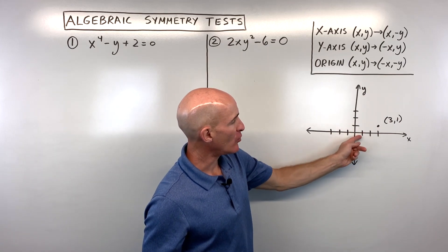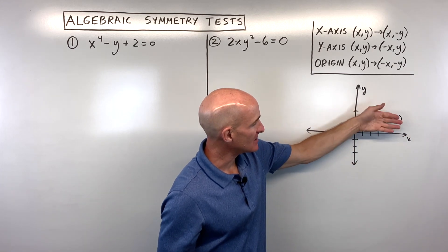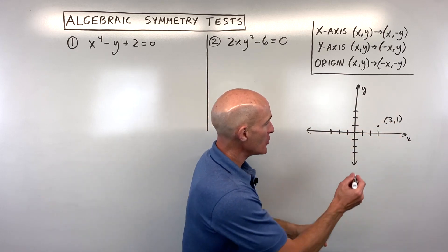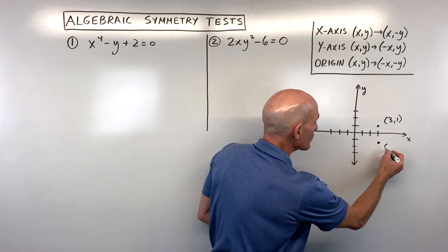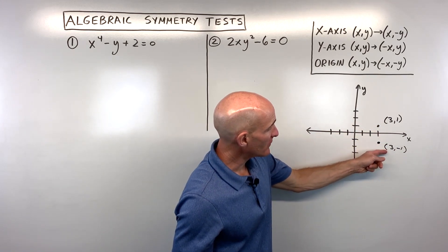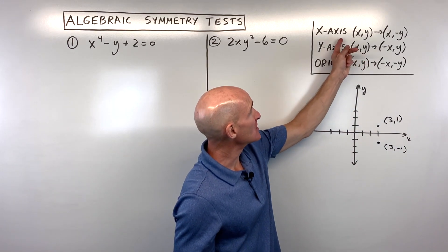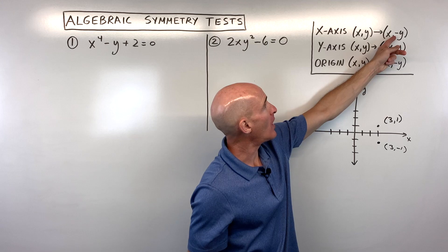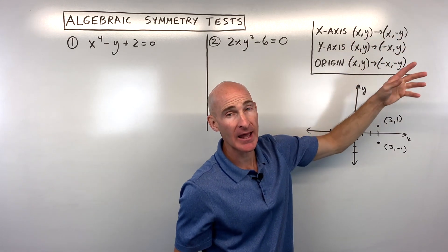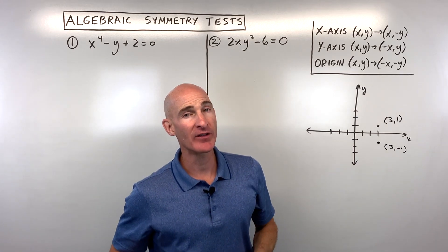Take, for example, a point like 3, 1. If I reflect this over the x-axis, it's like folding over that x-axis line — it's the mirror image. You can see that this point would end up right here at 3, negative 1. So when reflected over the x-axis, the y-coordinate changes sign to the opposite. So when testing for x-axis symmetry, we replace y with negative y. If we get the original equation back when we simplify, that tells us it's symmetric about the x-axis.